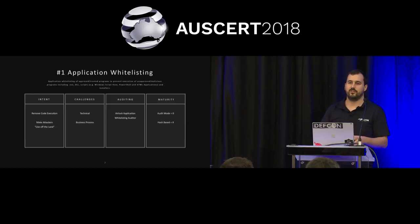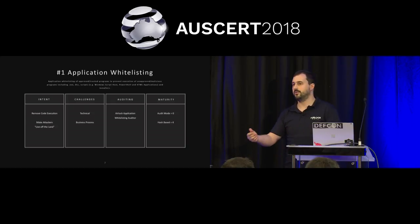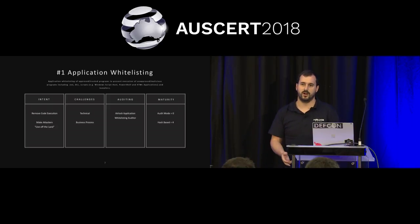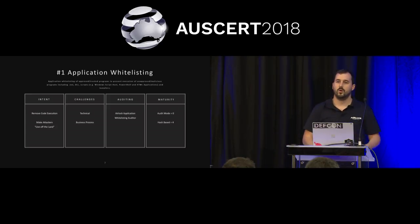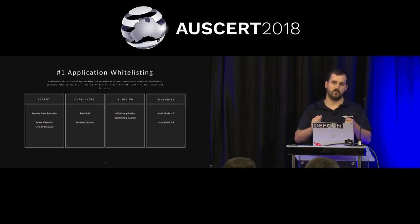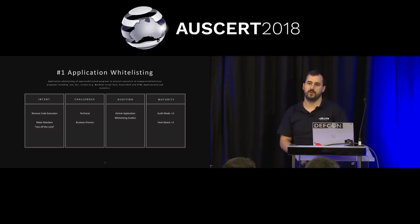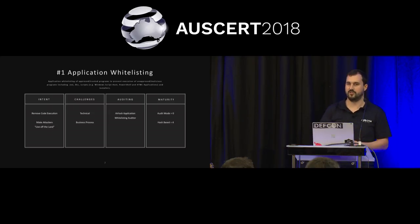Business processes really need to be thought about before you try to tackle whitelisting. For example, if someone brings in a USB key with a new piece of software and that user wants to run it, what's the process for getting that approved? What's the process in which an organization reviews the software, decides whether it's trusted, and updates the whitelist? And who's responsible for doing that in various areas? Mapping out and assigning those responsibilities is also a big challenge.